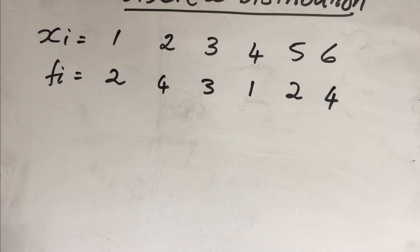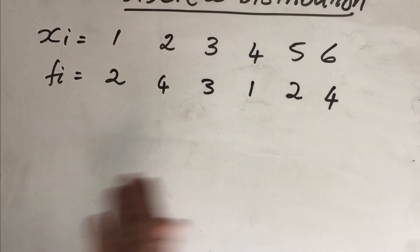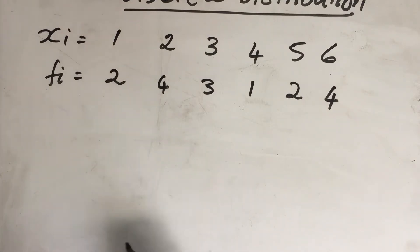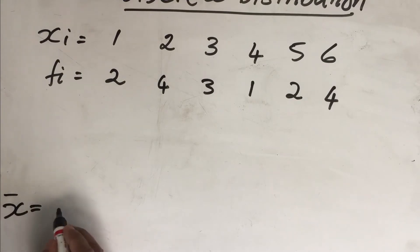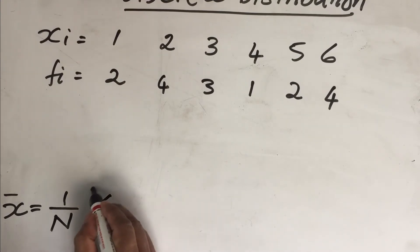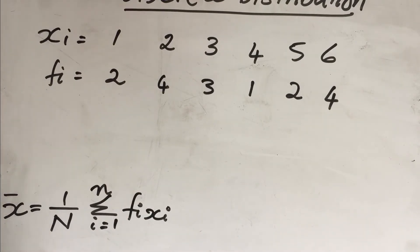Now let us consider how to calculate the mean of a discrete distribution. Here is an example: we have the number of chocolates students collected ranging from 1 to 6, with corresponding frequency values fᵢ. To find the mean of this distribution, we employ the formula: x-bar equals (1/N) multiplied by the summation of all fᵢ·xᵢ values from i=1 to n.